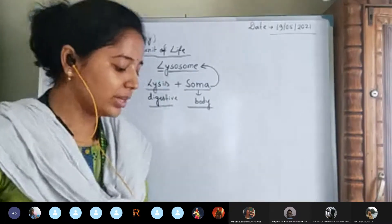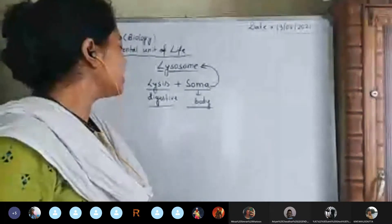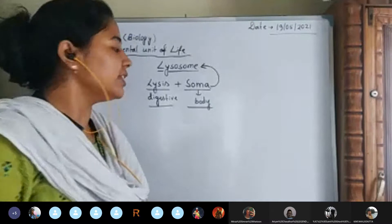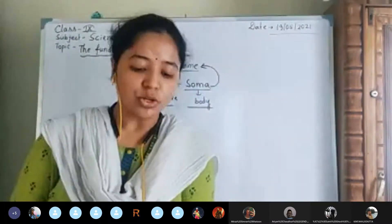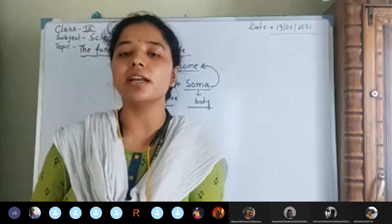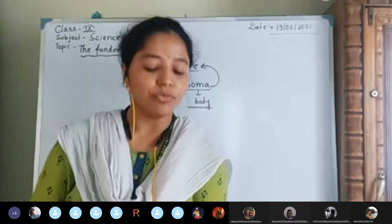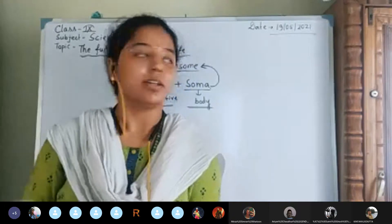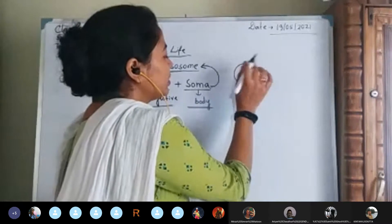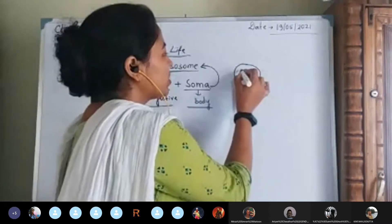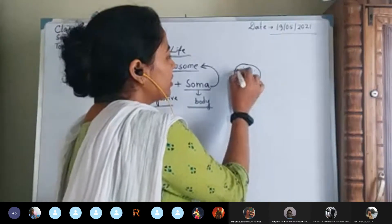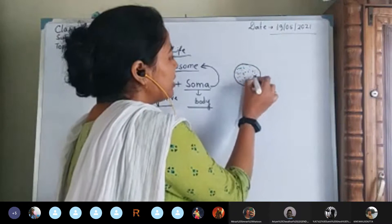Lysosome comes from lysis meaning digestive and soma meaning body — a digestive body. These are very small, spherical vesicle structures covered by a single membrane, and which contain digestive enzymes inside them.